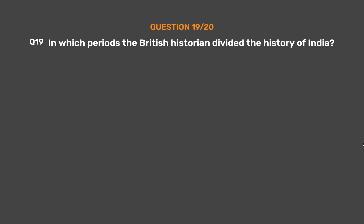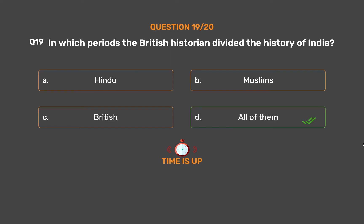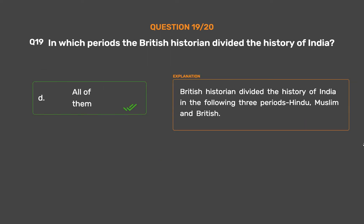Question 19: Into which periods did British historians divide the history of India? Option A: Hindu. Option B: Muslim. Option C: British. Option D: All of them. The correct answer is Option D: All of them. British historians divided the history of India into three periods: Hindu, Muslim, and British.